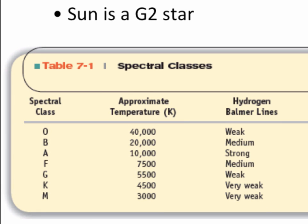Here's a table of the spectral classes with their approximate temperatures and what lines are present. You don't need to memorize this — the main thing to remember is the order O, B, A, F, G, K, M, and also that the A's have the strongest hydrogen lines, even though they're in the middle of the sequence at about 10,000 degrees and are not the hottest stars. The hotter stars — B and O — have weaker hydrogen lines. The cooler stars — F, G, K, M — also have weaker hydrogen lines. So the strongest hydrogen comes in the middle, at a middle temperature.